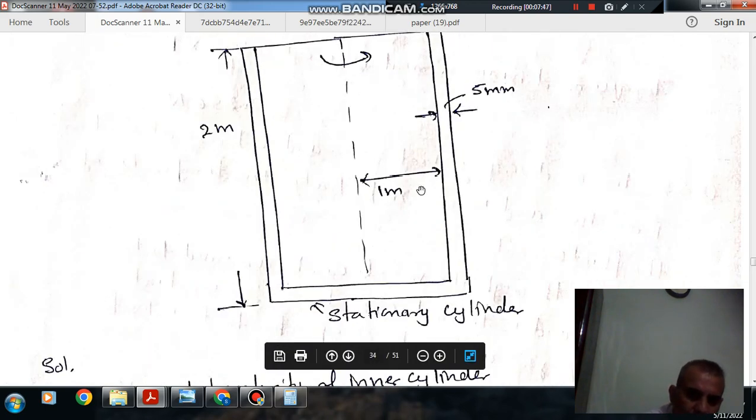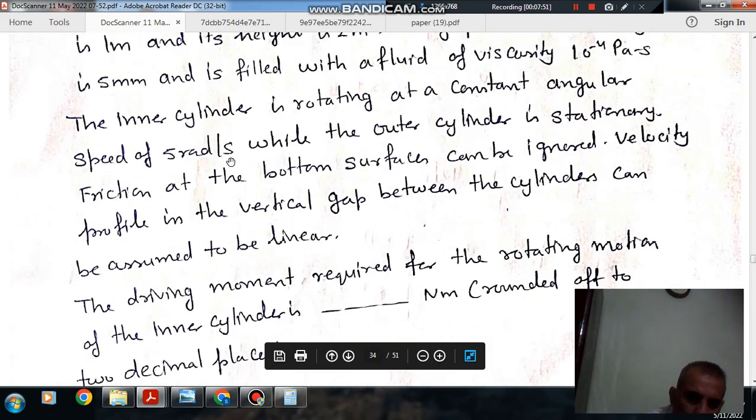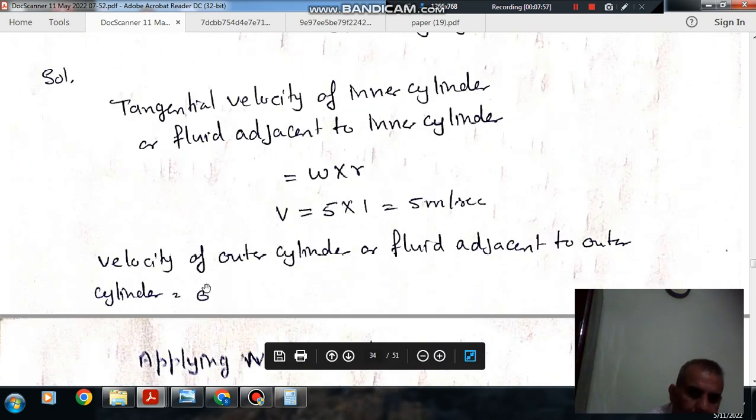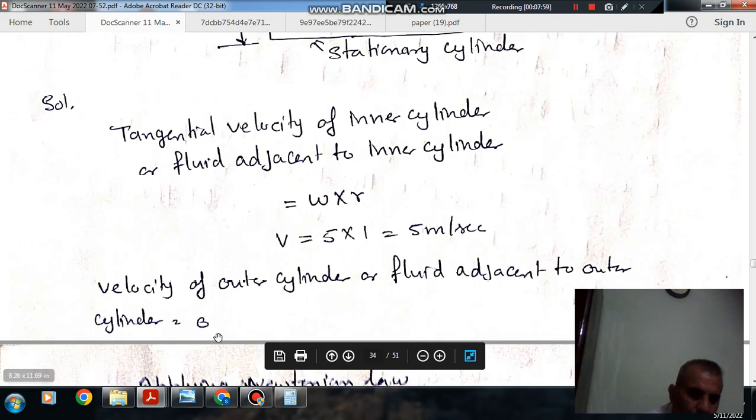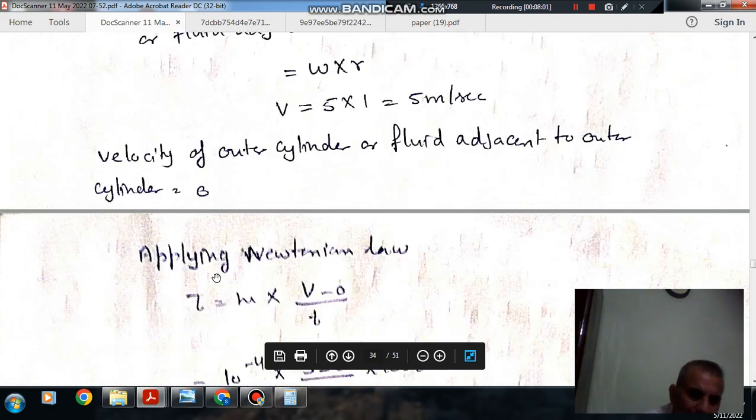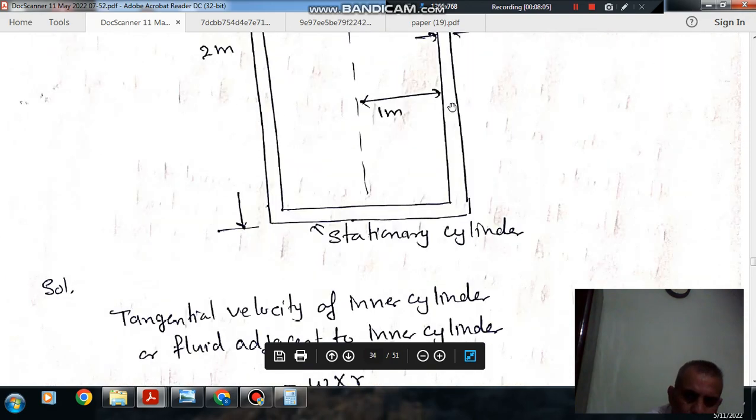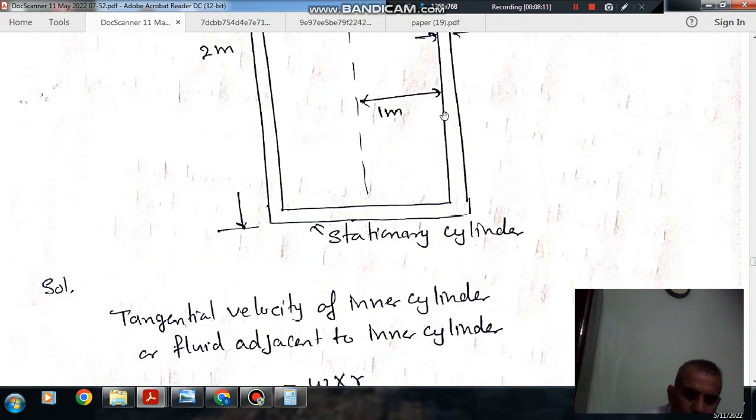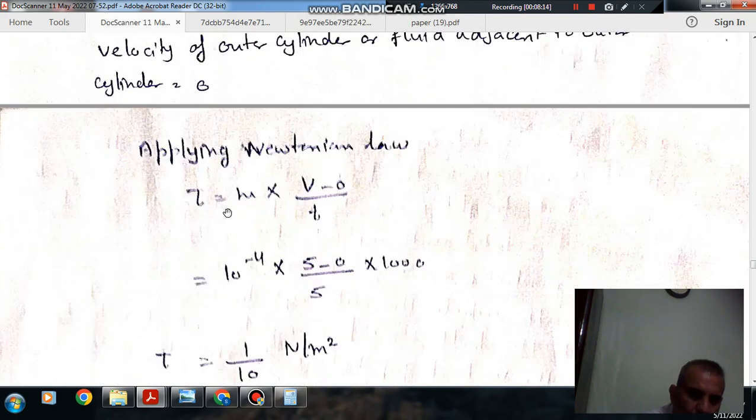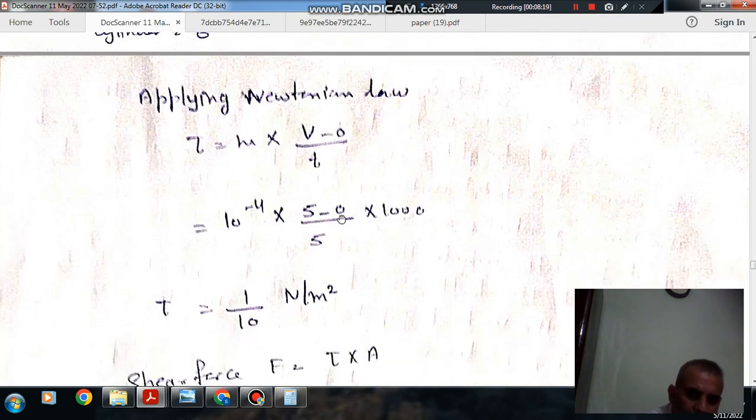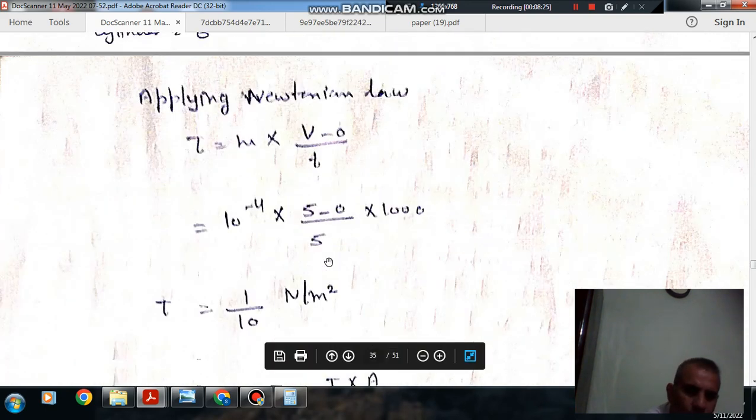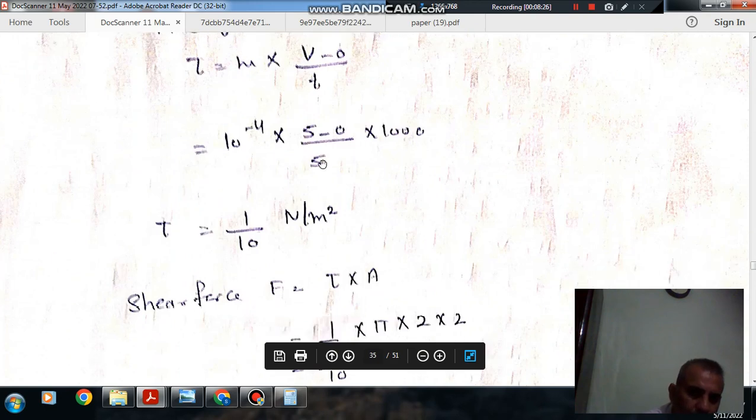As the radius of the inner cylinder is 1 meter and angular velocity is 5 rad/s, the velocity of the inner cylinder is ω times R equals 5 m/s. The outer cylinder is fixed with velocity zero. Applying Newton's law for the fluid in the 5 mm gap: τ equals μ times (V minus 0)/t equals 10⁻⁴ times 5/(5/1000), so τ equals 1/10 Pascal.